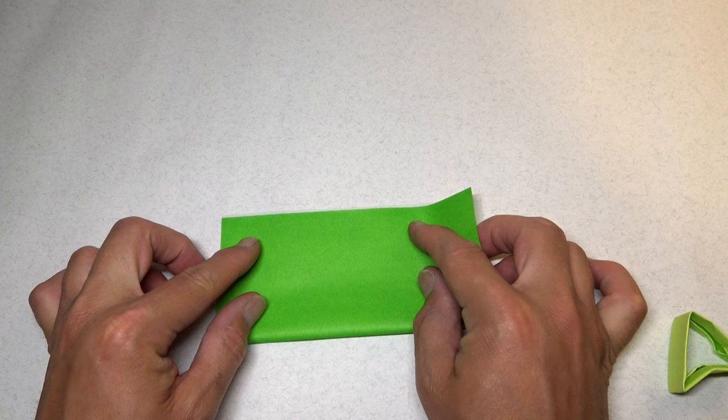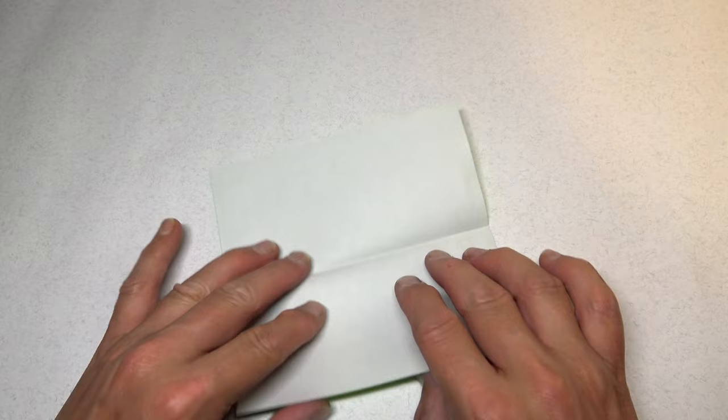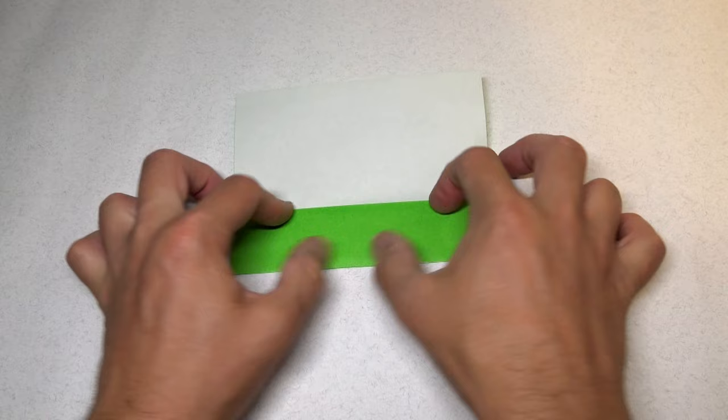Begin white side up and fold in half. Try to make really precise folds and crease sharply and unfold and fold to the crease. And repeat